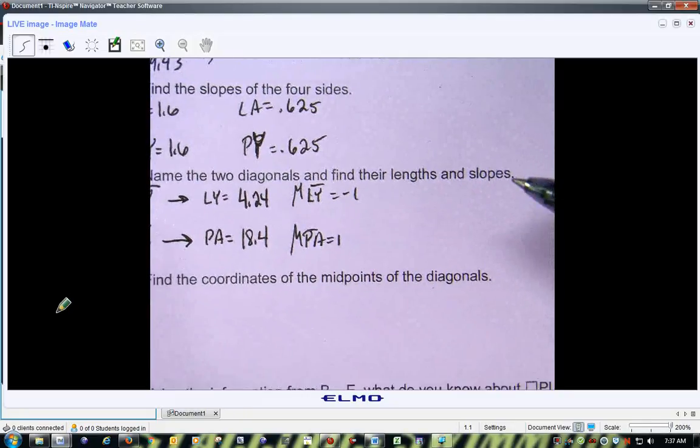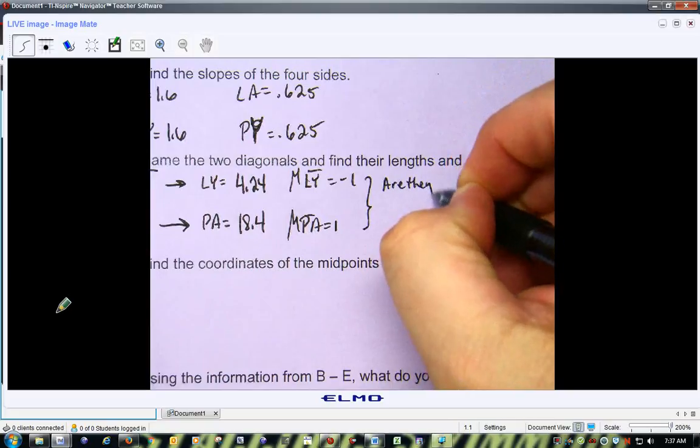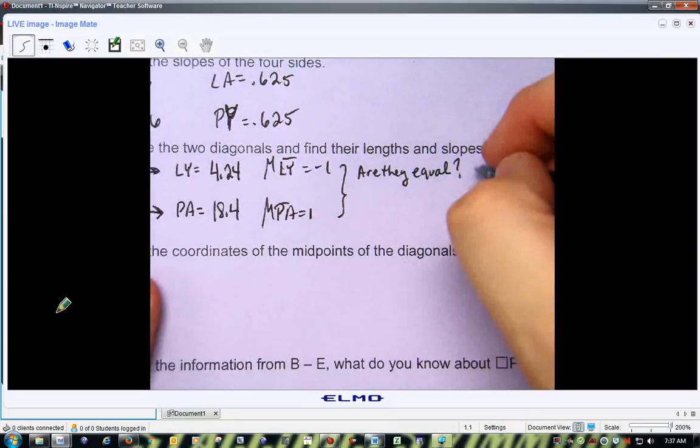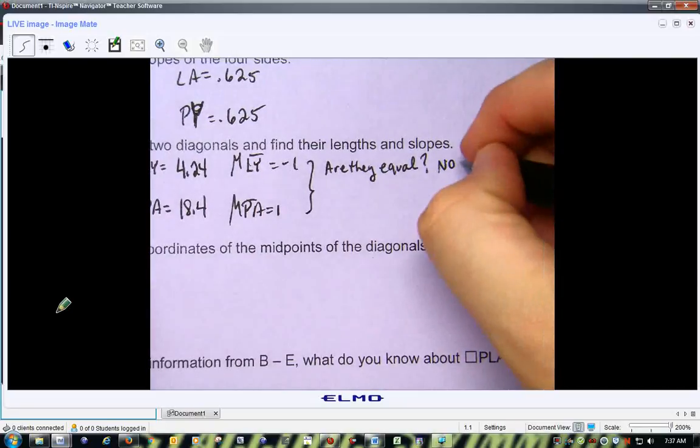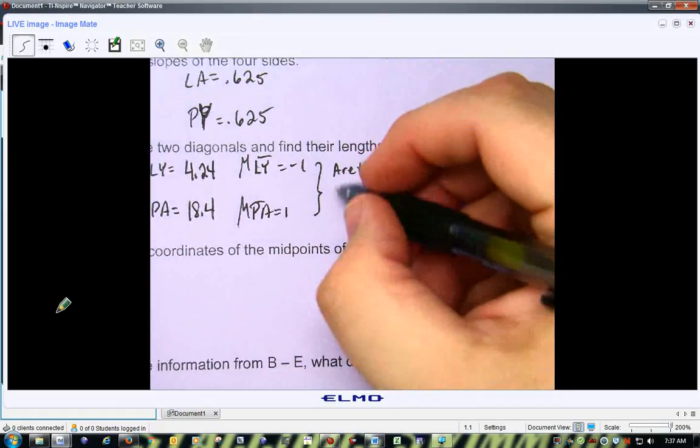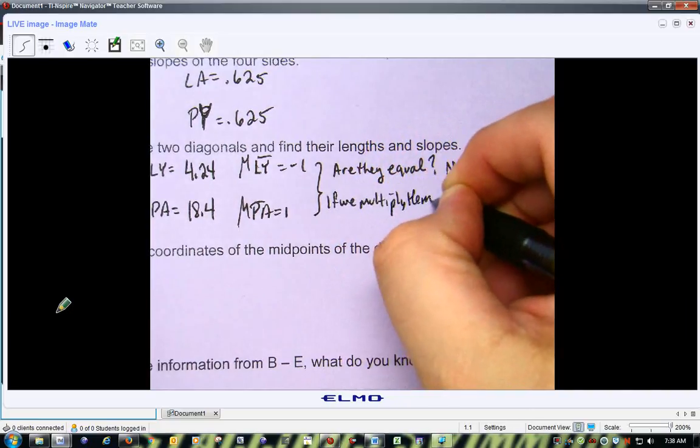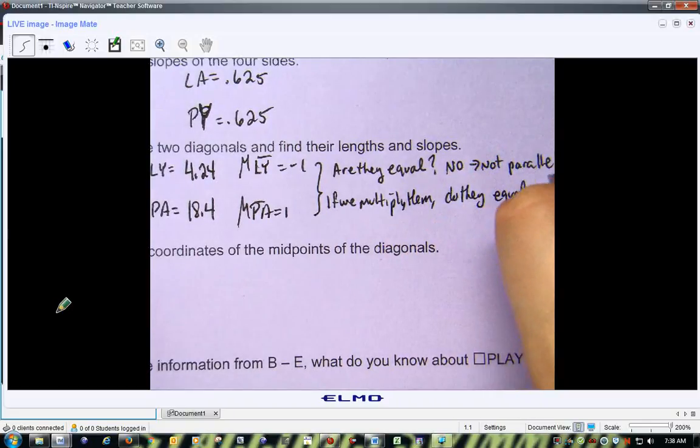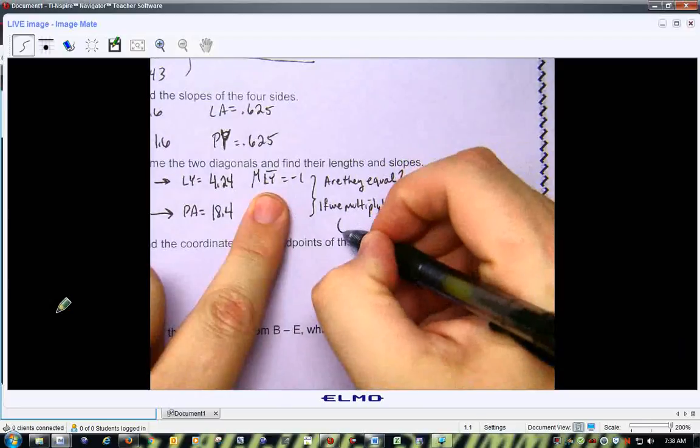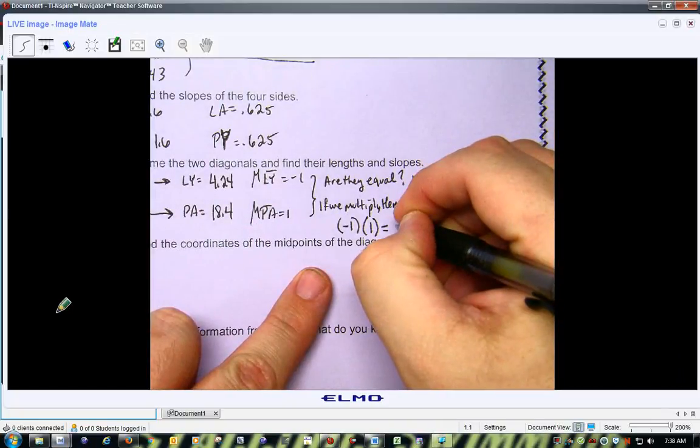Now, as far as slopes go, here's what you want to ask yourself. Are they equal? Is 1 equal to negative 1? No. And what that tells us is they're not parallel. Because if they are equal, they are parallel. Now, if you multiply them, if we multiply them, do they equal negative 1? Well, I have one slope that's 1, one that's negative 1. What's negative 1 times 1?